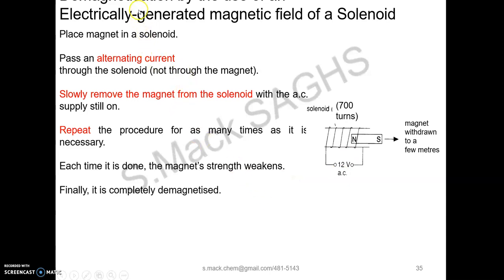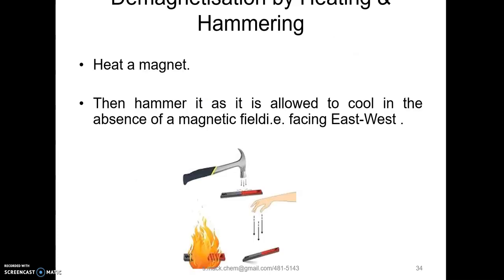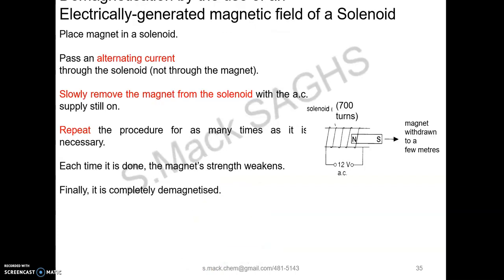We can also demagnetize using a solenoid. If you take a magnet and place it into the solenoid, similar to the setup before, what is changed is: instead of using a direct current (DC), an alternating current is used through the solenoid. As the magnet is slowly removed from the solenoid with the alternating current, the magnet becomes demagnetized. So the two methods to demagnetize a permanent magnet are: heat and hammer in an east-to-west direction, and using an alternating current in a solenoid.